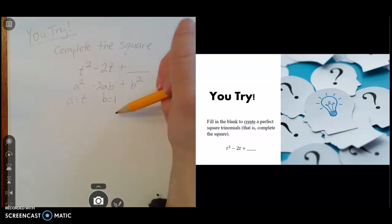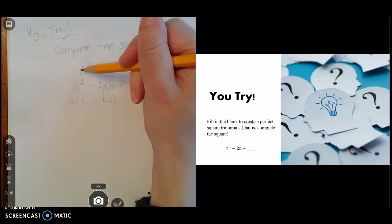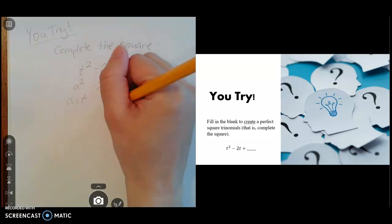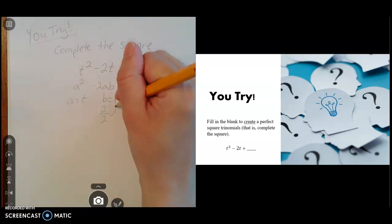Also, you could also do this by just saying the t goes with the t squared. So I'm going to take that negative 2 and divide it by 2, and that will also give you the 1 here.